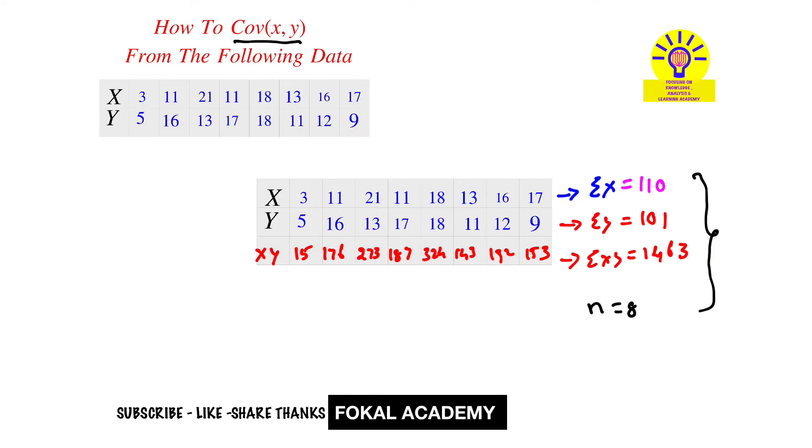Now we have one relation for finding covariance of x and y. So that is covariance of xy equal to summation of xy by n minus summation of x by n into summation of y by n. This is mean of xy data, and this is mean of x data, and this is mean for y data.